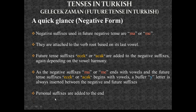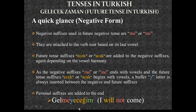Personal suffixes are added to the end after the tense suffixes. For example, with the verb 'gelmek' meaning 'to come': the verb root is 'gel,' which requires the negative suffix 'me' based on its last vowel 'e.' Since both suffixes involve vowels, a buffer 'y' is inserted, giving 'gelmeyecek' — where 'k' softens to 'ğ' — and with the first person singular suffix it becomes 'gelmeyeceğim.'